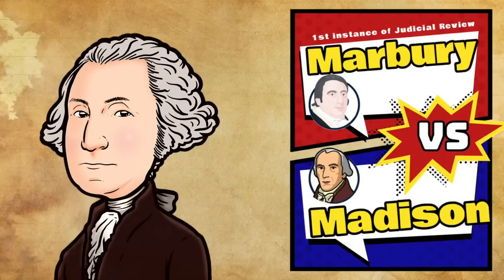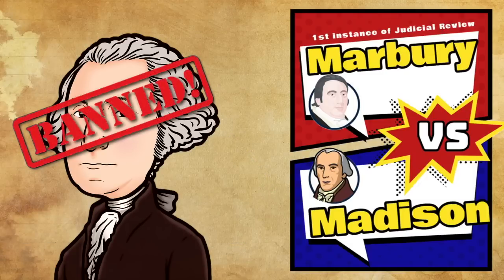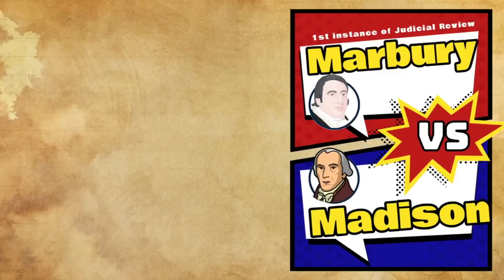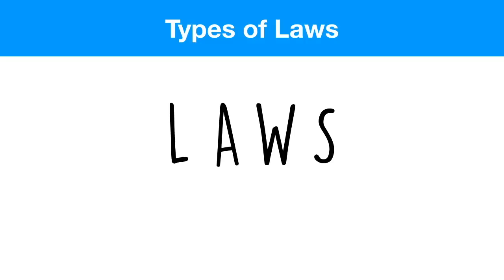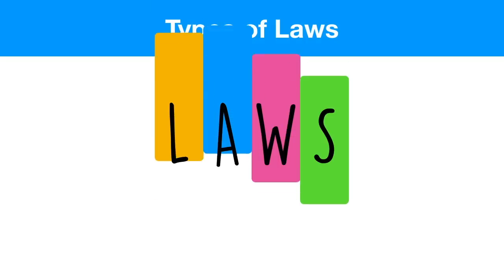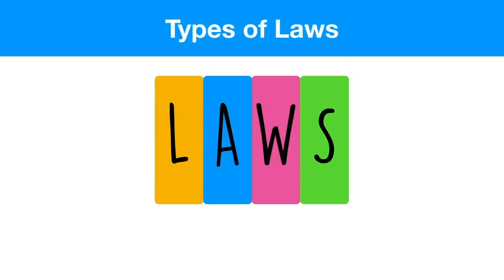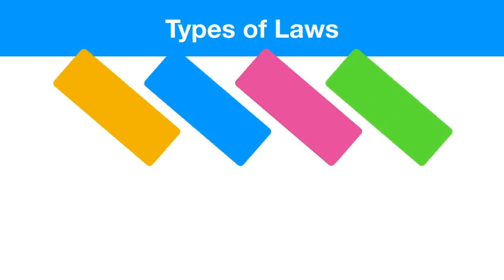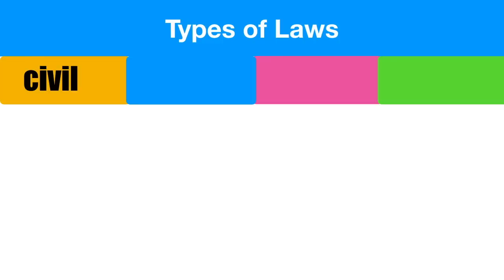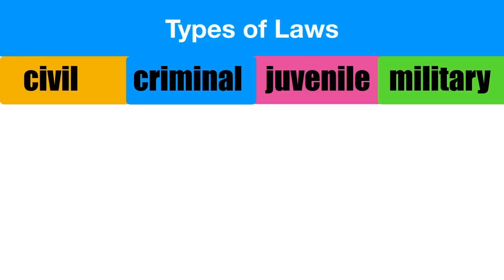If the Supreme Court thinks the president is doing something out of line, they can say, Mr. President, what you are doing is unconstitutional, and the president has to stop. Same thing goes for laws made by Congress. Speaking of types of laws, there are a couple of different kinds that the judicial branch will interpret: civil, criminal, juvenile, and military.